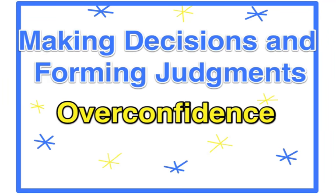The last two issues we've talked about in terms of making decisions and forming judgments have been heuristics, the representativeness heuristic and the availability heuristic. Both of these shortcuts did lead to us making errors in our judgment. This presentation is going to be about overconfidence.